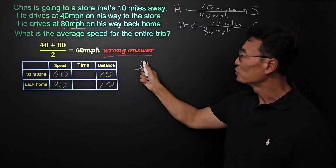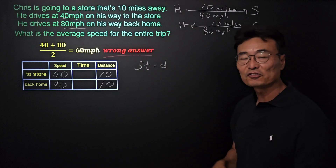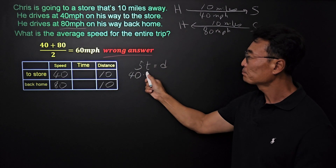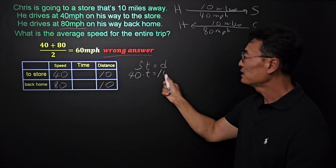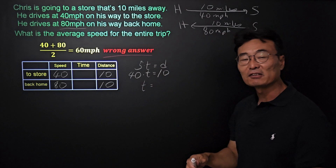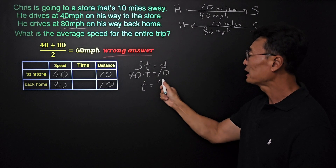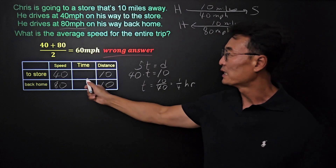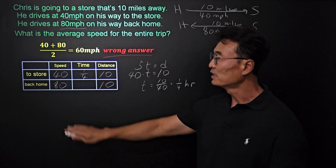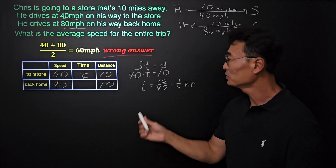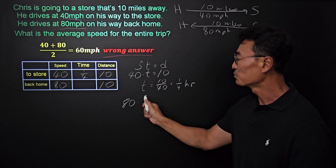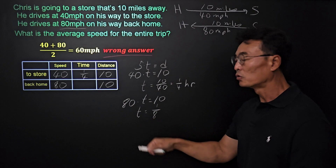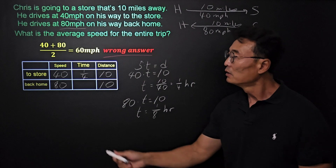The formula we're going to use to find the time is s × t = d, or speed times time equals distance. For going to the store, the speed is 40 and the distance is 10, so t = 10/40 = 1/4 hour. For coming back home from the store, the speed is 80 and the distance is 10, so t = 10/80 = 1/8 hour.